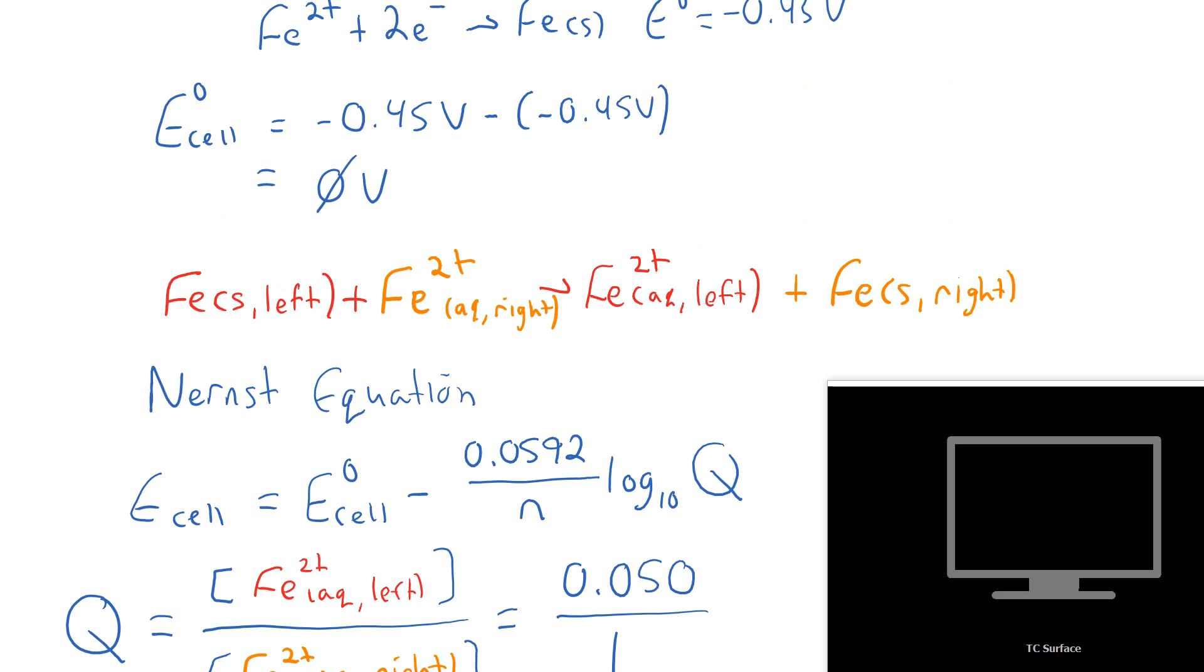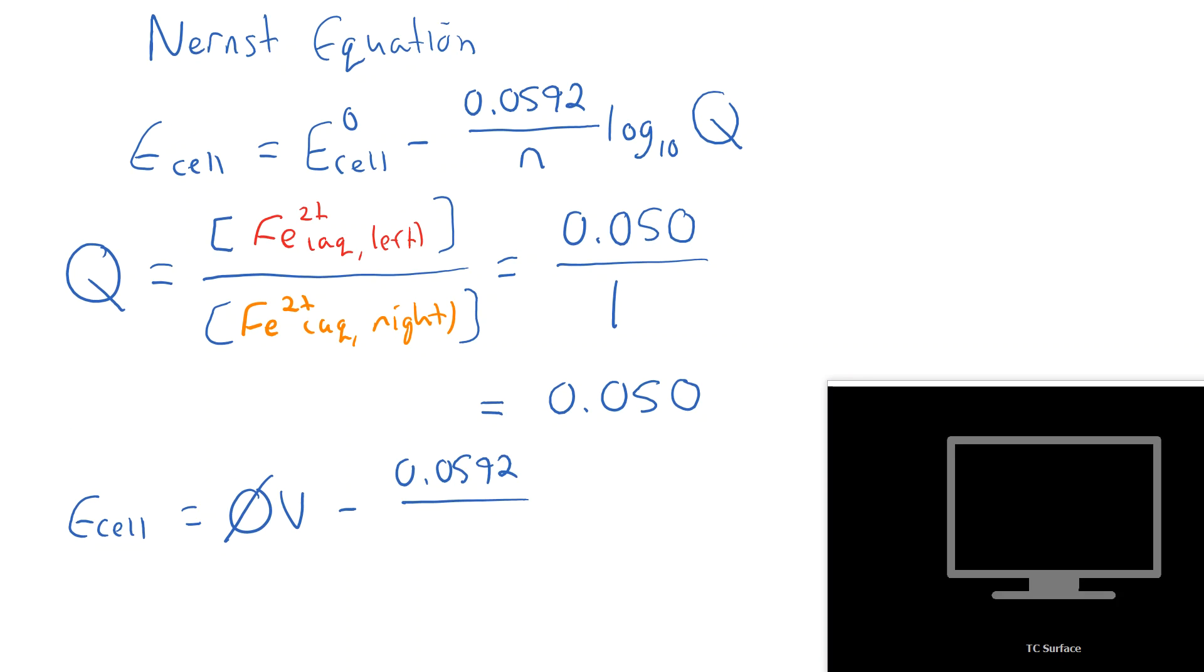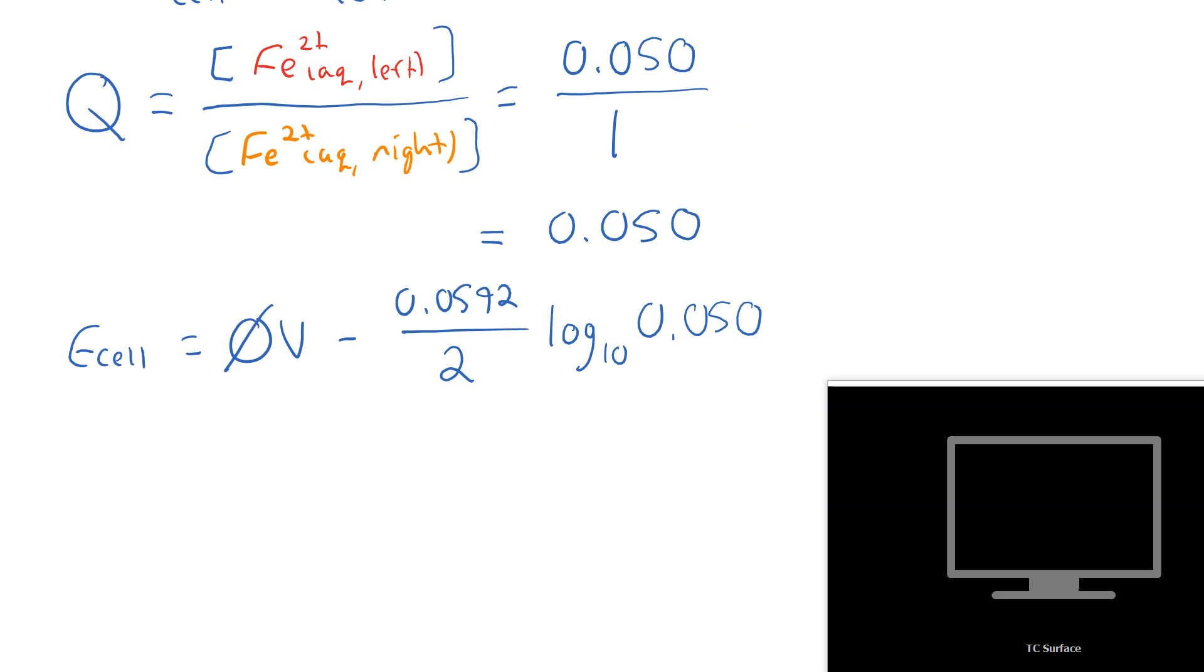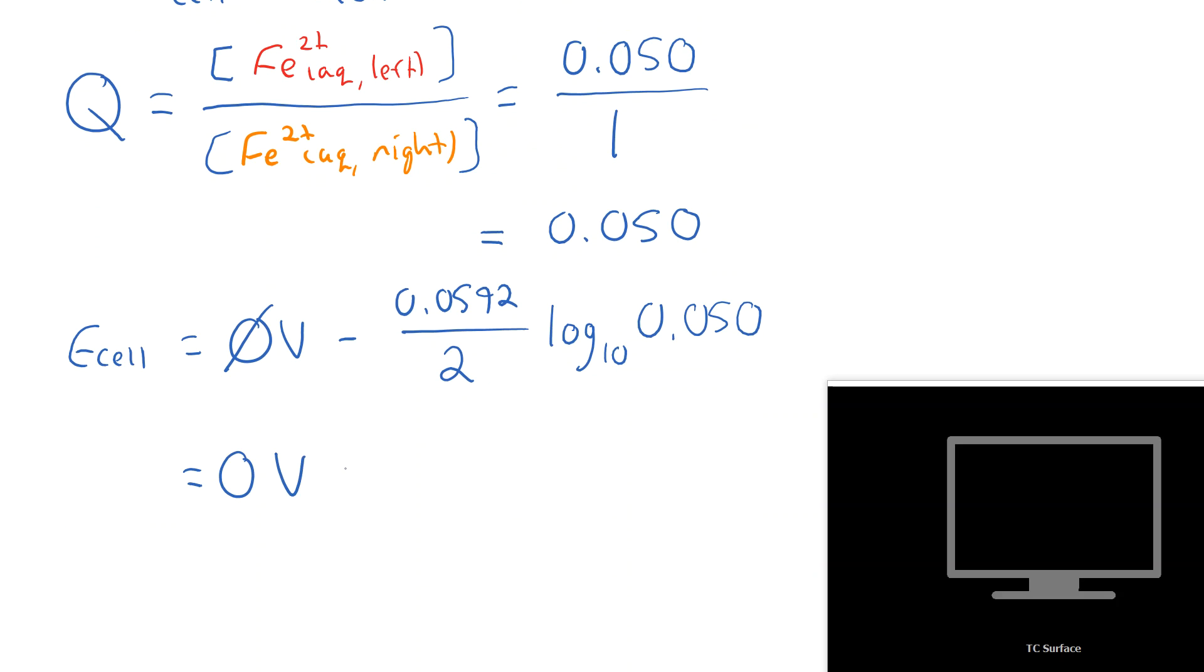What's N going to be in this case? Well, if you look, we've got iron changing into iron 2+. That is a transfer of two electrons. And if we're transferring two electrons, we're going to put a 2 down there in our equation. So times the log base 10 of Q, which we already calculated was 0.050. You plug that in your calculator. You get 0 volts minus 0.0385 volts, which gives you a positive 0.039 volts.